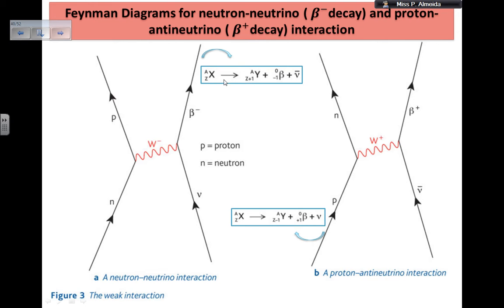We need to know these equations well because in this case, the Feynman diagrams are about the interactions — they want to know the interactions. However, I can also have different Feynman diagrams for the same type of equation. For the same equation, I can get this Feynman diagram that shows what meets what and gives what.